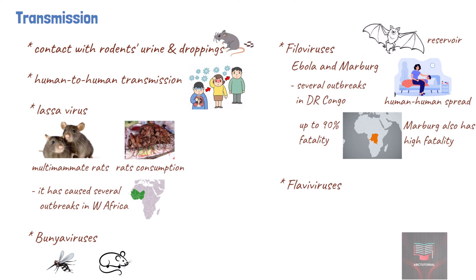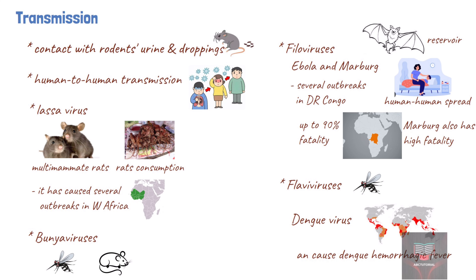Flaviviruses can cause a range of different diseases and can be transmitted by arthropods. Dengue virus, a Flavivirus, is transmitted by the Aedes mosquito. This disease is endemic in over 100 countries and can be found in Africa, the Americas, Asia, Australia, Europe, and the Pacific Islands. Dengue hemorrhagic fever and dengue shock syndrome are associated with high mortality rates.